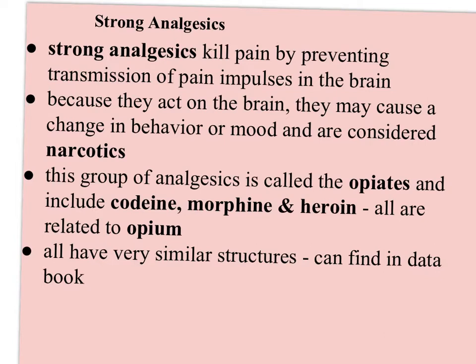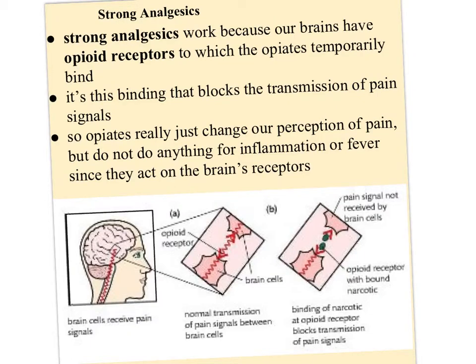They all have very similar structures, which you can find in the data booklet. They work because our brains have opioid receptors to which the opiates temporarily bind, and it's this binding that blocks the transmission of pain signals. So opiates really just change our perception of pain — they don't actually do anything for what's causing the pain, the inflammation or the fever, because they're acting on the brain's receptors, not at the site of the injury.